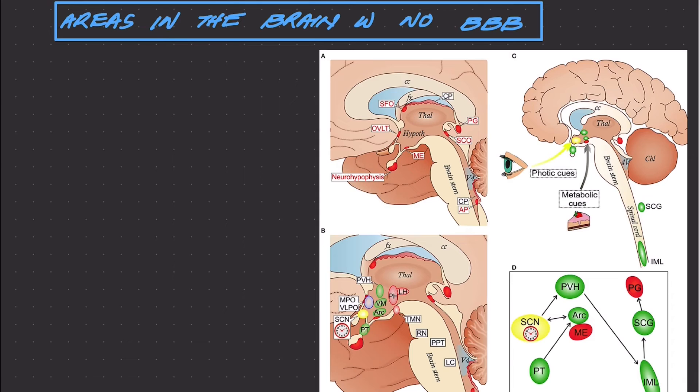So to wrap up this topic of blood-brain barrier, I would like to mention that these non-fenestrated endothelial cells in the central nervous system are not present everywhere. There are some select areas where there is no blood-brain barrier, where there are fenestrated endothelial cells in the blood vessels.